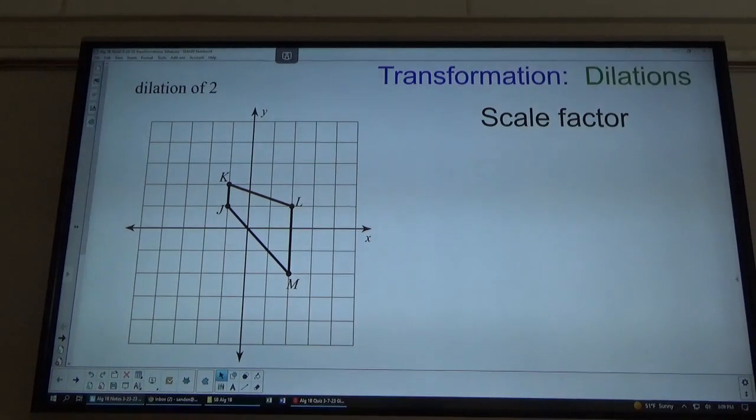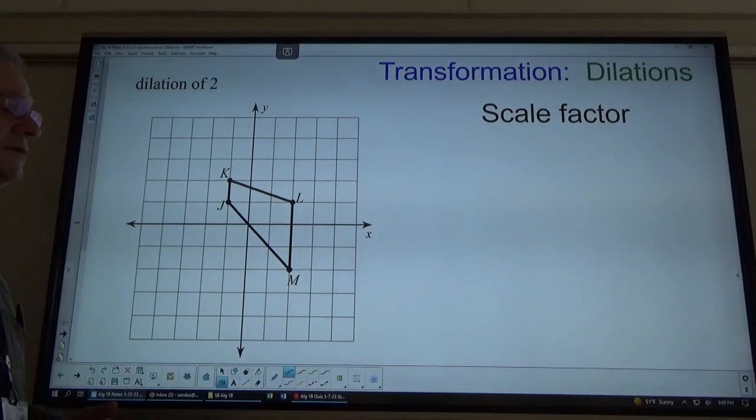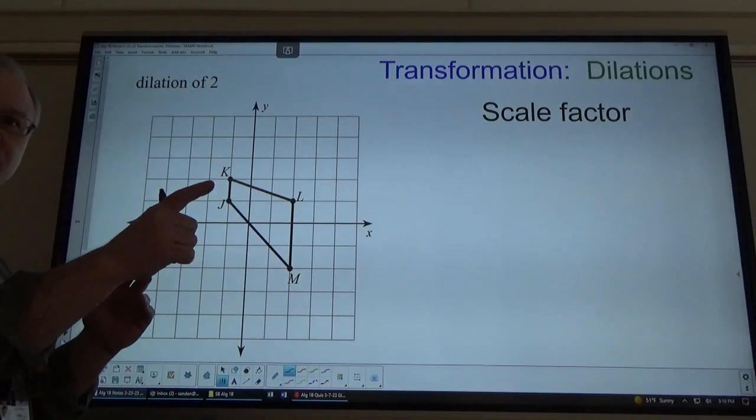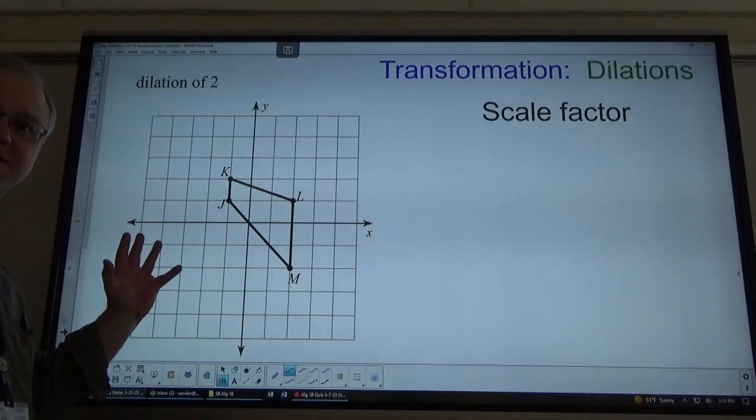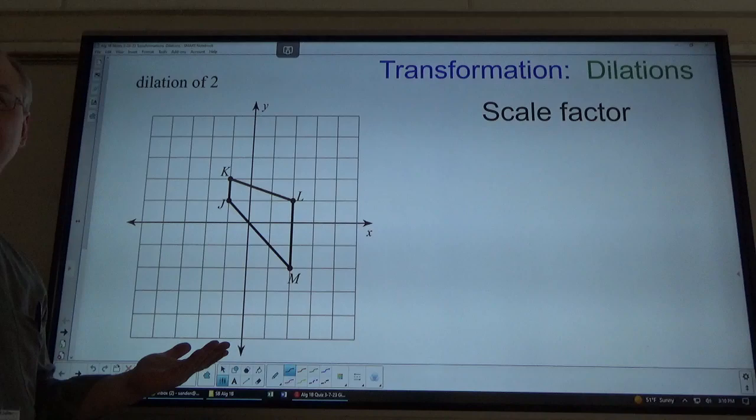Welcome. Today we're going to talk about dilations. A dilation - if you take your cell phone and spread your fingers over a photo, it typically expands the photo, or if you bring them together, it condenses it. That's what a dilation is.